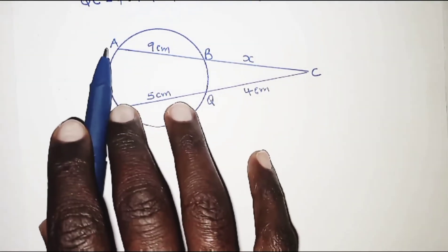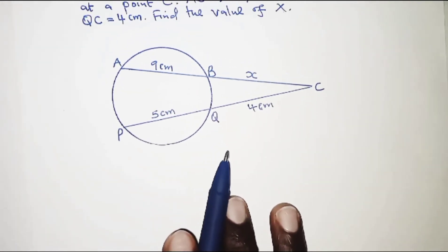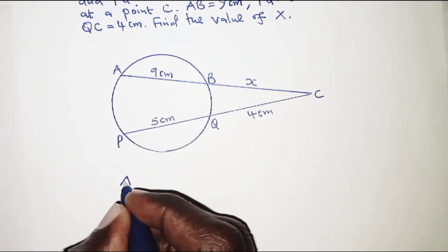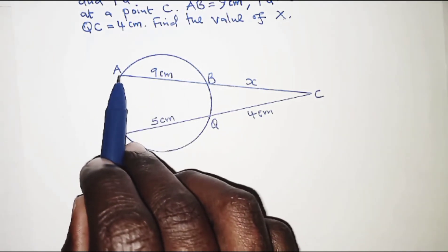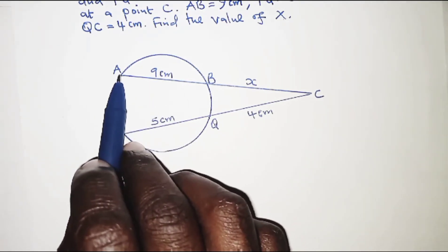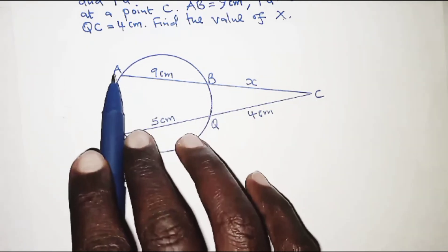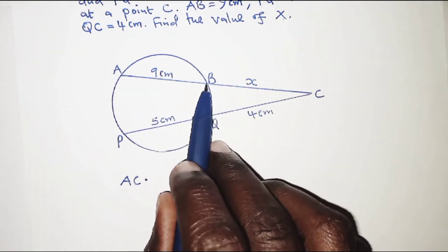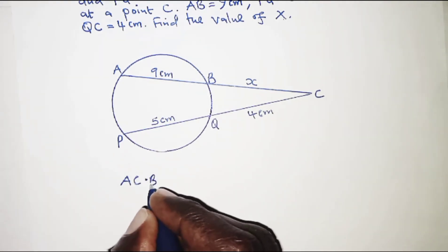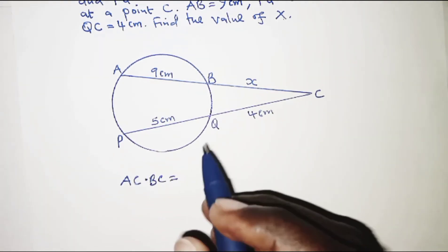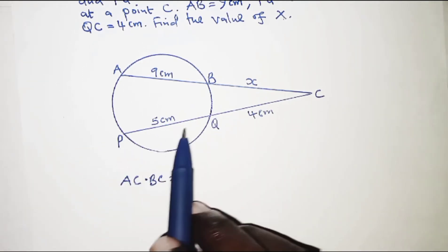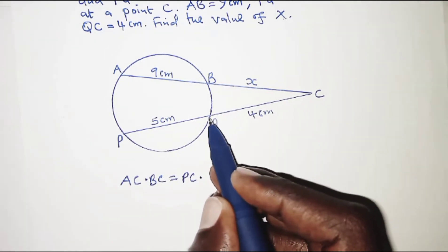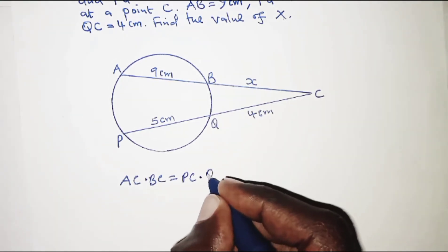The relationship between chord AB and chord PQ is: take the length from one endpoint to the intersection point, AC, times the length from the other endpoint to the intersection, BC. This equals the same thing for chord PQ: PC times QC. So AC·BC = PC·QC.